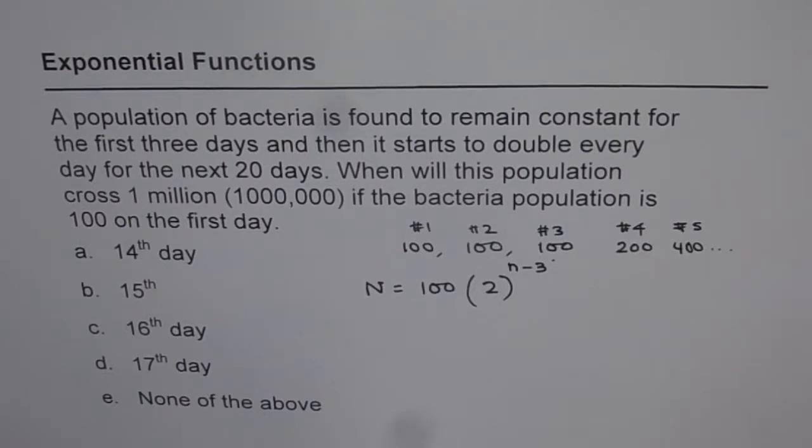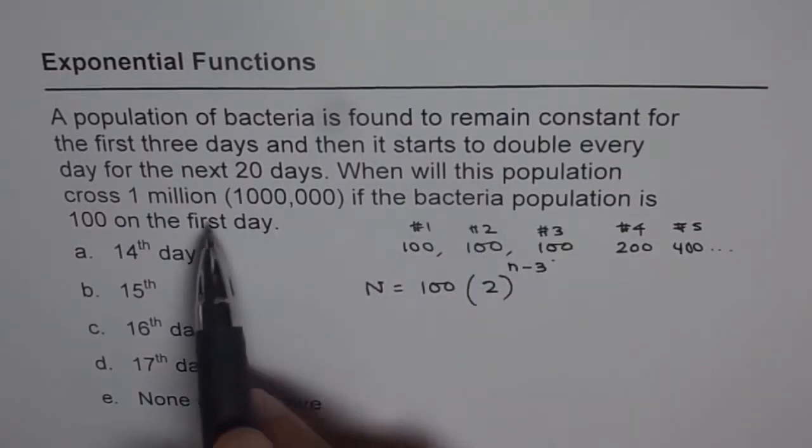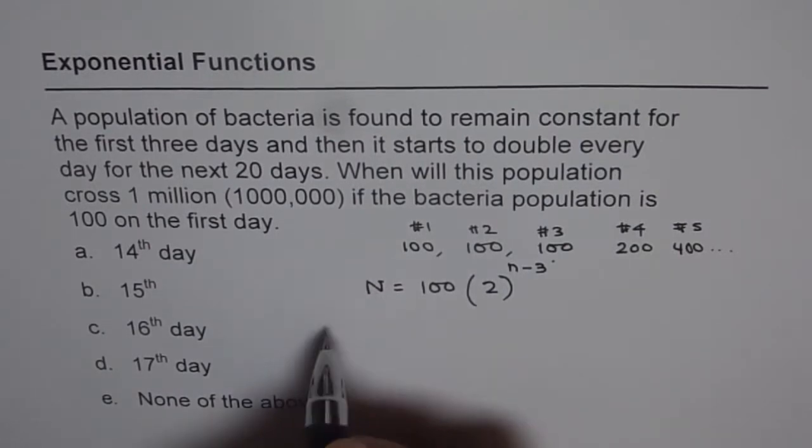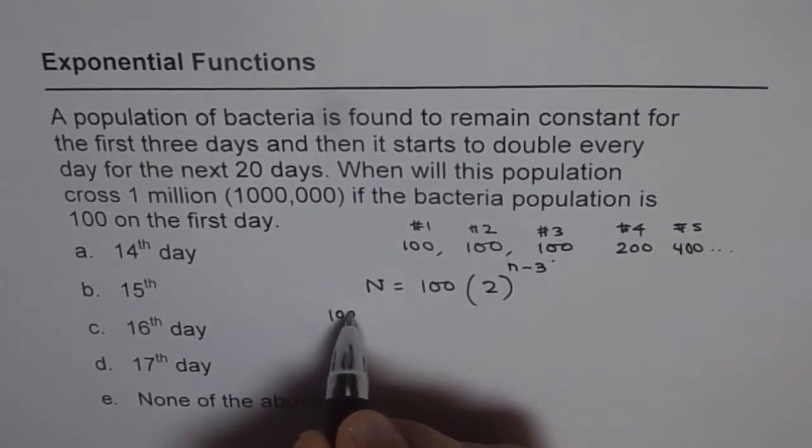Now the question is, when will this population cross one million? So we know N should be one million. So we have 1,000,000 divided by 100...